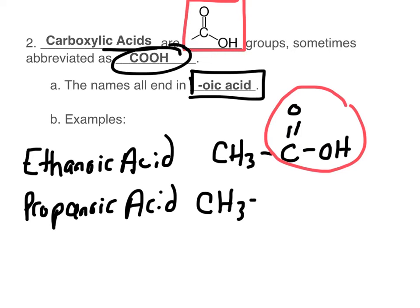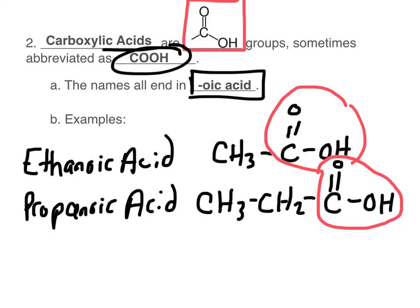Propanoic acid looks like this. Notice right here I have my carboxylic acid group. What if I wanted to draw the line structures for these? That would be ethanoic acid - I have one, two carbons. On my second carbon, I have a double bond and an OH. For propanoic acid, it would look like this - one, two, three carbons. On the third carbon, I have a double bond and oxygen and an OH. Just because you see an OH doesn't necessarily mean it's an alcohol. If it's attached to a carbon with a double bond and oxygen, that's a carboxylic acid. Those are two different groups.